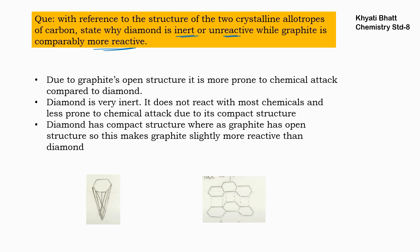Graphite can react with other substances but diamond cannot. Looking at the structures, diamond has a compact structure where one carbon is attached with four other carbon atoms, making it very strong and close-packed. In graphite, one carbon atom is attached with only three other carbon atoms.